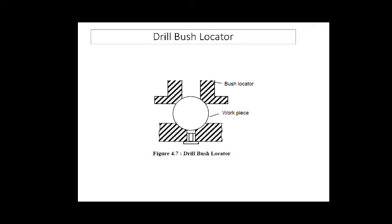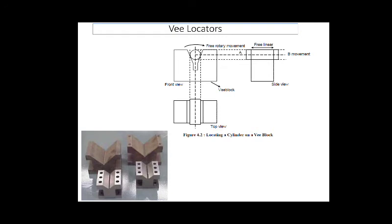Next we are going to see the V locator. This is a quick and effective method of locating the workpiece with the desired level of accuracy. It is used for locating circular and semi-circular types of workpieces. As you can see in the figure, the main part of the locating device is a V-shaped block which is normally fixed to the jig. This locator can be of two types: fixed V locator and adjustable V locator.